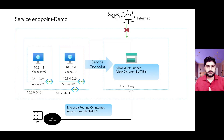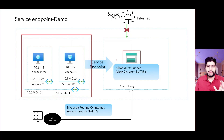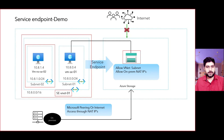Now let's see this in action. We have a virtual network named SE vNet1. This virtual network wants to connect to a storage account. All services are created in the same region, though storage account endpoints can be created even if the storage account is in another region — storage is region-independent. You have a virtual network with two subnets: one subnet is connected using a service endpoint, whereas the other subnet is not connected using a service endpoint.